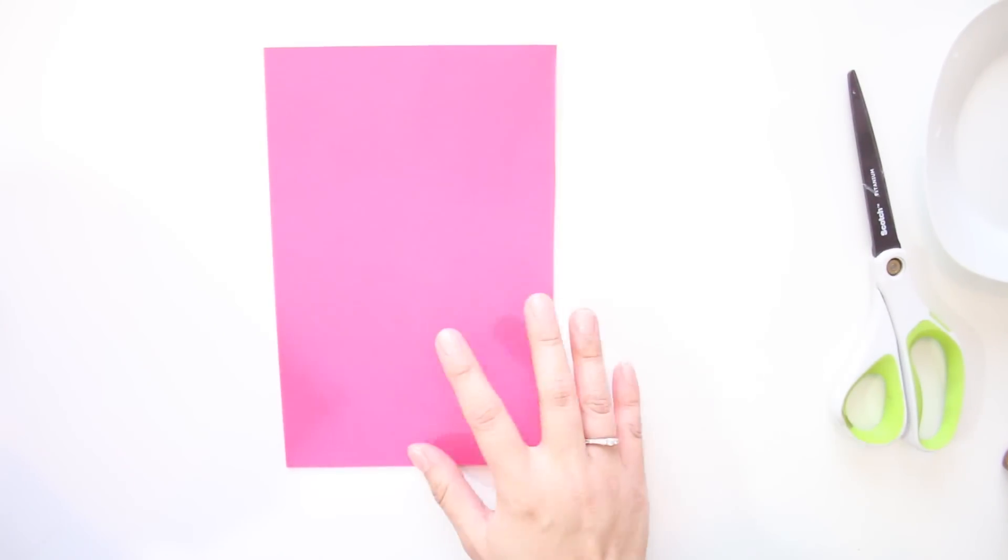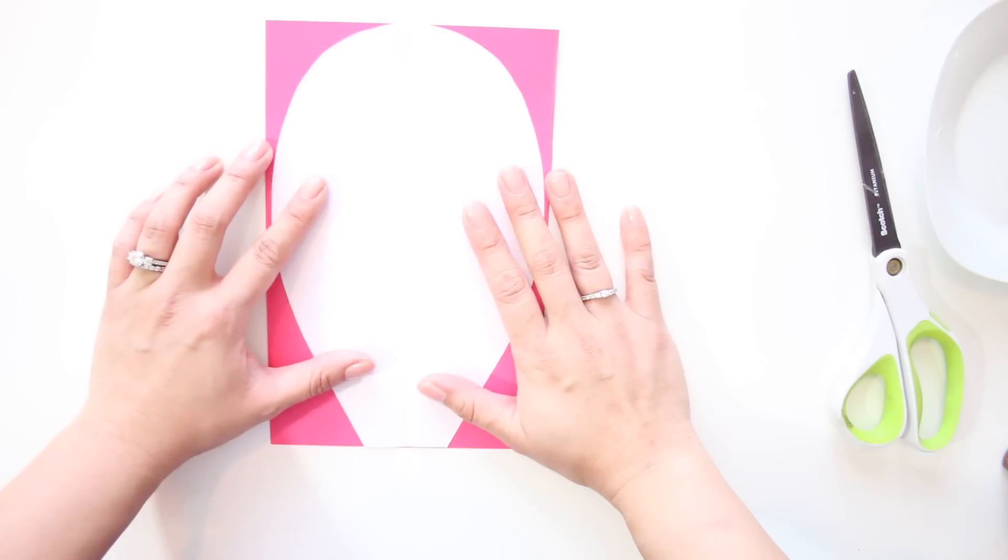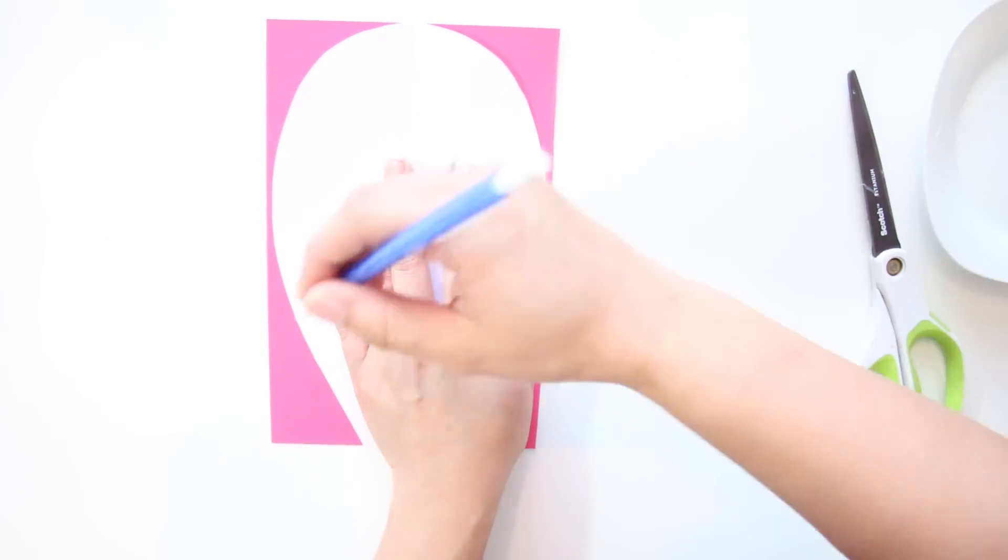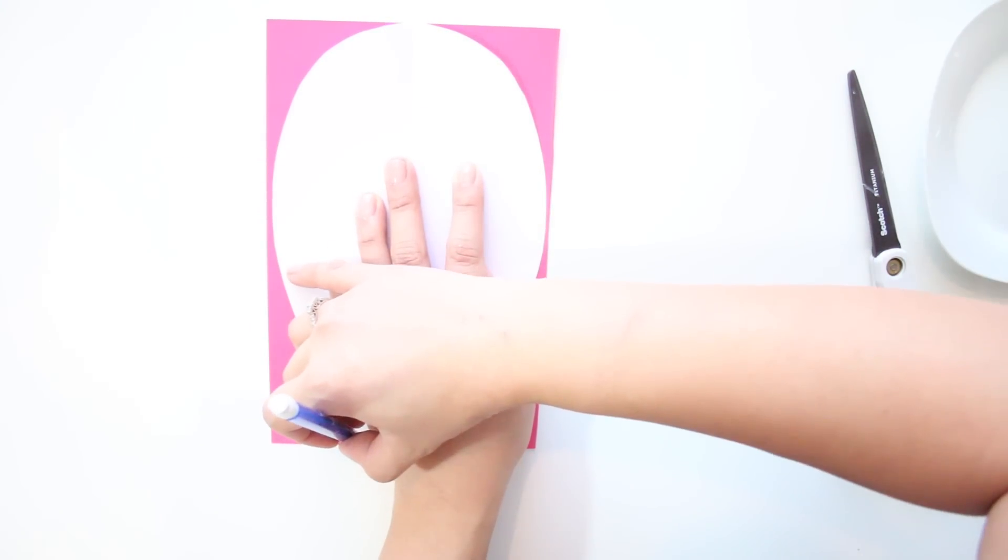Starting with the largest petal template, take 6 sheets, stack them on top of each other, trace the template, and cut the petal out. You should end up with 6 large petals.